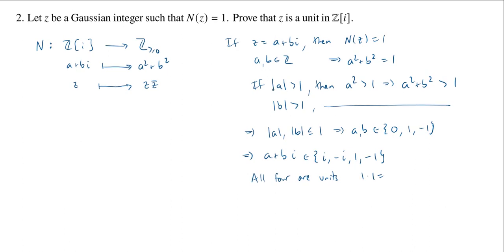What are the inverses? 1 times 1 is 1. Negative 1 times negative 1 is 1. And then you have i times negative i equals 1. This tells you that they're all invertible.